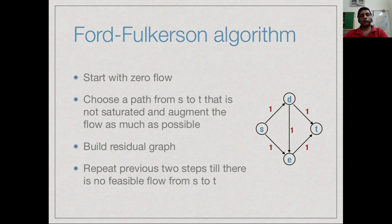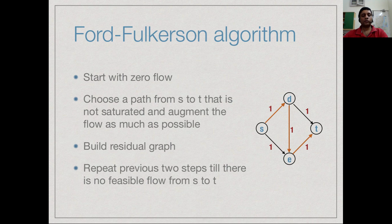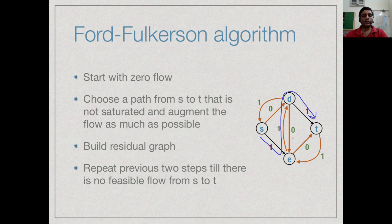Going back to the example: we start with the wrong flow, build the residual graph, and observe a new path in the residual graph. Augmenting along that path cancels out the earlier bad flow, restoring the correct routing. In the final residual graph, S has no outgoing capacity, so there are no more feasible paths and we stop. The resulting flow is the correct final flow.